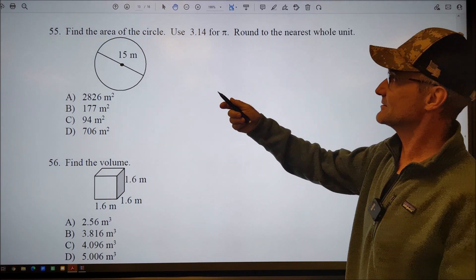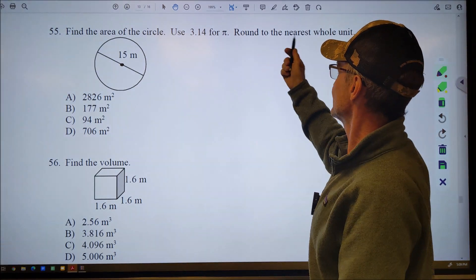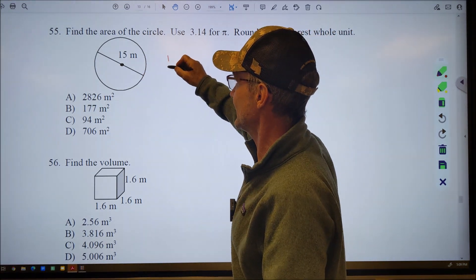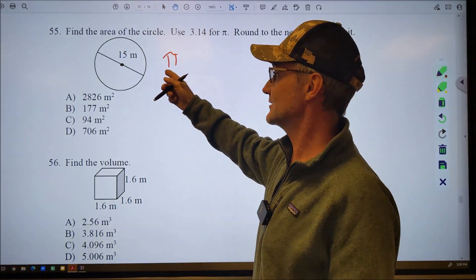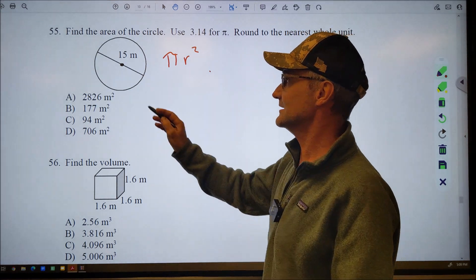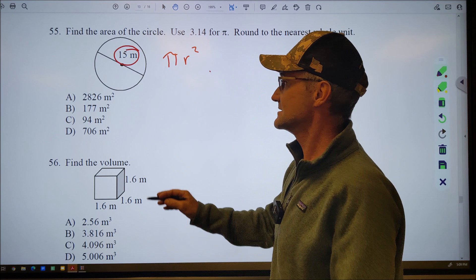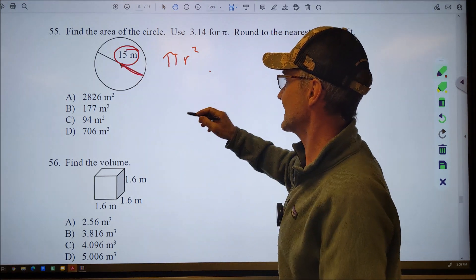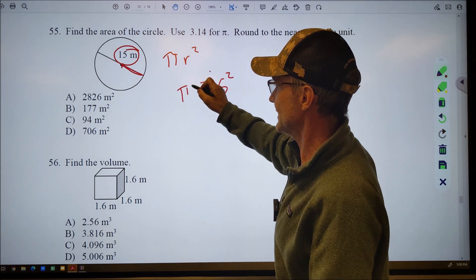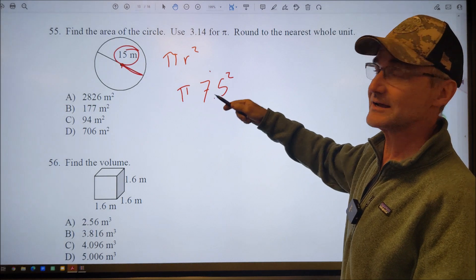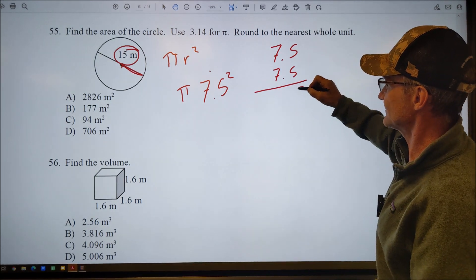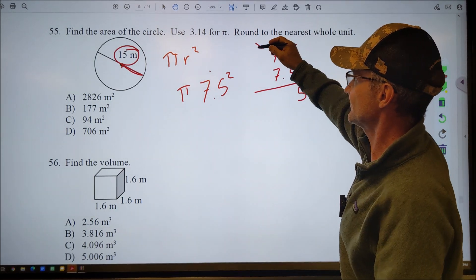Number 55 on the area of the circle, we'll use 3.14 for pi. Round to the nearest whole unit. So area of a circle is pi, that's a number, it's really a ratio of circumference to diameter, times radius squared. A little bit of a trick here. They're giving you a diameter of 15. So half of that, the radius is half of that or seven and a half. So I have 7.5 squared times pi. Squared means 7.5 times 7.5. I'm just going to multiply that out.